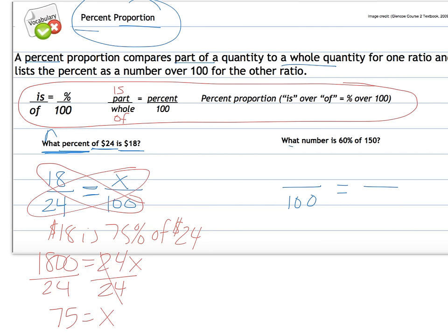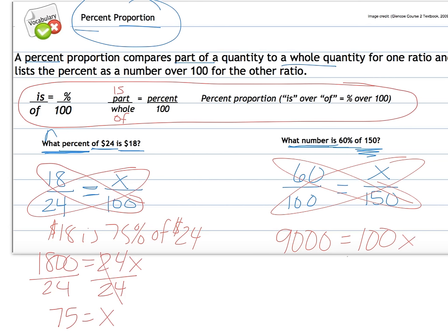Trying over here. What number is, so that means we're looking for our part. Notice I flipped it around over here. 60% so that 60 goes above our 100 because percent means per 100. And then it says of 150. So 'of' is our whole number. So we're looking for 60% of 150. So we do our cross products. So we do 60 times 150 for 9,000 is equal to 100 times what number? Undo multiplication with division. And what we get is 90 is equal to x. So that means 90 is 60% of 150. Reasonable answer because it's a little bit more than 50% or half of 150.